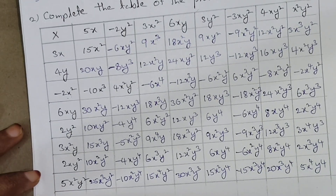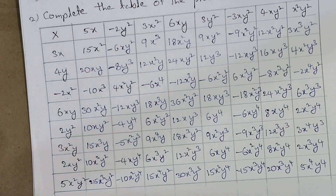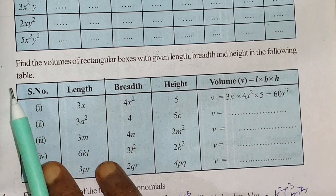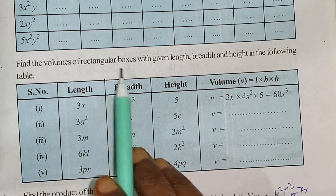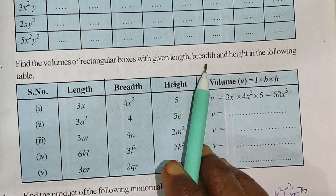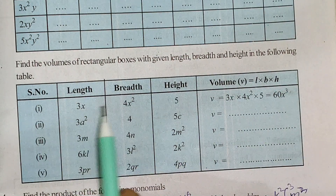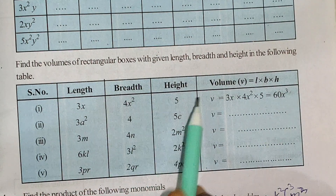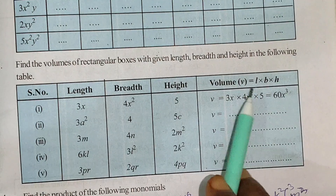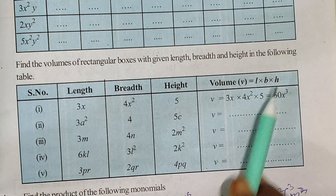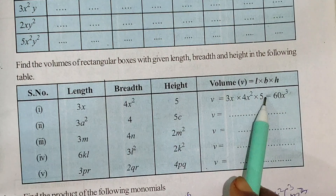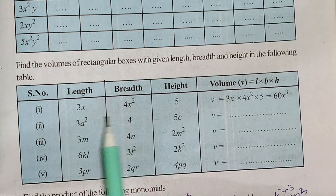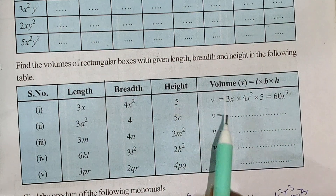So this is the complete solution. Next, third bit: find the volume of rectangular boxes with given length, breadth, and height in the following table. Length, breadth, and height are given. The volume formula is V equals L into B into H.